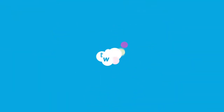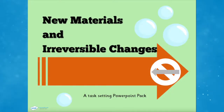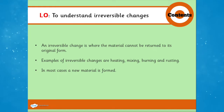Are you looking to teach your children about reversible and irreversible changes? Well, have I got some fantastic resources for you. A great place to start with teaching a lesson or a series of lessons on irreversible changes is the ages 9 to 11 science materials and irreversible changes lesson pack.